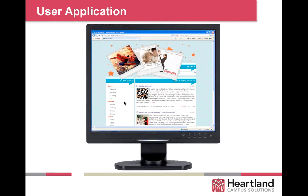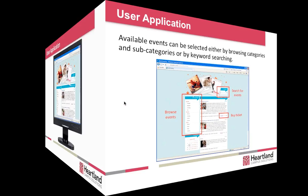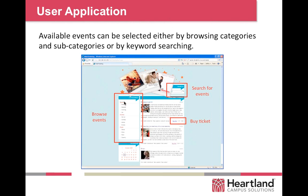Let's move into the user application — the web portion that someone would utilize. When they go to the website, it has a search option, different categories to browse for an event: sports, movies, music, and subcategories. When it shows you the events, you simply click to purchase tickets. You can also search by date — if you want to see what events are happening on campus this Friday, click on that date and get a listing of all events being operated through the box office.